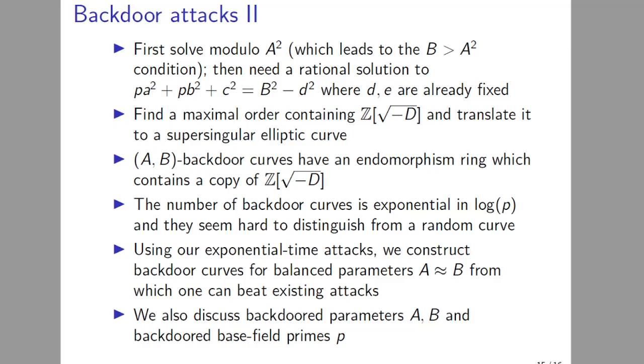Once you've solved this equation, you have found the θ in quaternion form. And then what you do is you find the maximum order containing that particular quaternion, and then you translate it to a supersingular curve. To understand the solution step for this problem, essentially any θ is good which has a particular minimal polynomial. In this context, it's actually all θs are good for which θ^2 = -D. So essentially, (A,B)-backdoor curves are curves which have an endomorphism ring which contains a copy of Z[√-D]. And we show that the number of these maximum orders is actually exponential in log(p), which gives an indication that it's probably hard to distinguish a random curve from a backdoor curve without knowing any information about its endomorphism ring.